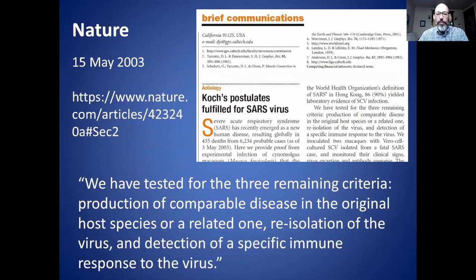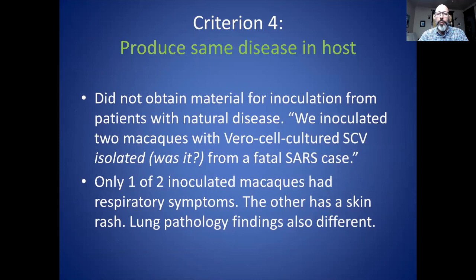Back to the article for the remaining three criteria: the authors claim they tested for production of comparable disease in the original host species or a related one, re-isolation of the virus, and detection of a specific immune response. Since they didn't satisfy the first criteria and had nothing isolated, it would be next to impossible to satisfy these three. For criterion four, they did not obtain material from patients with the natural disease. Instead, they used the virus cultured in monkey kidney cells, which would be producing exosomes, and the virus was never isolated — so it's not clear what exactly they were inoculating with.